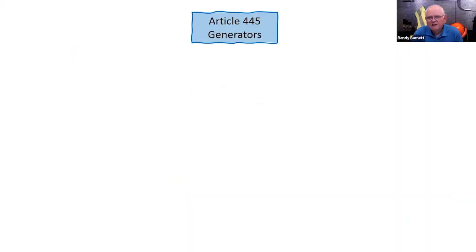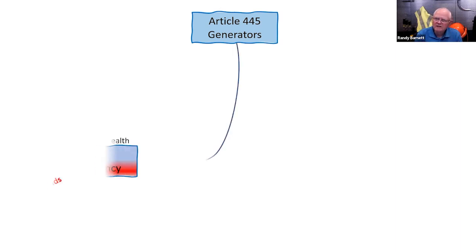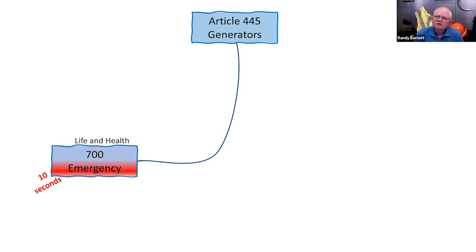We find our first information on generators in the NEC in Article 445, which covers general requirements for installation of generators. But we need to know about the applications as well. Back in Article 90, it talks about how Chapters 5, 6, and 7 supplement the information in those first four chapters. So we have Article 445 for installation requirements, but we also have an article in Chapter 7 — Article 700 — for emergency systems. If I'm installing a generator as an emergency system, these additional requirements apply.